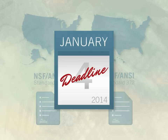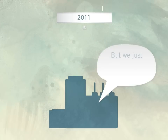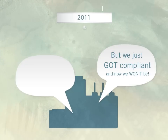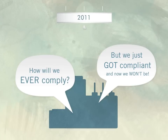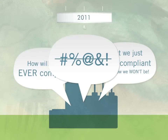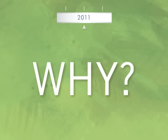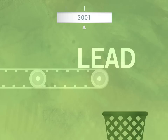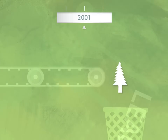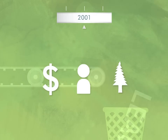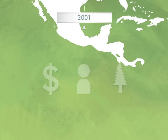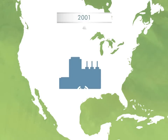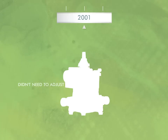Right back to 2011 — meter manufacturers panic. Some say, 'We just got compliant and now we won't be.' Others say, 'How will we ever comply?' And a few say things I can't repeat. But one company's not worried. Why? Let's jump all the way back to 2001. On their own, Neptune Technology Group revamped their production facilities to make meters lead-free — better for the environment, for their employees, and good for business. And it helps that they're the only water meter manufacturer in North America with their own foundry.